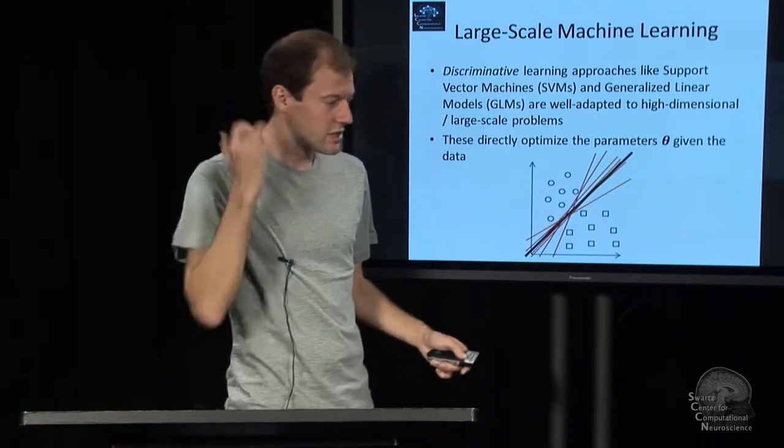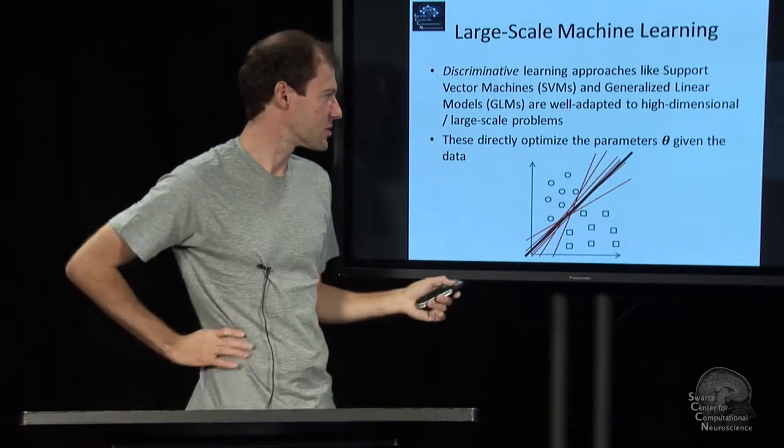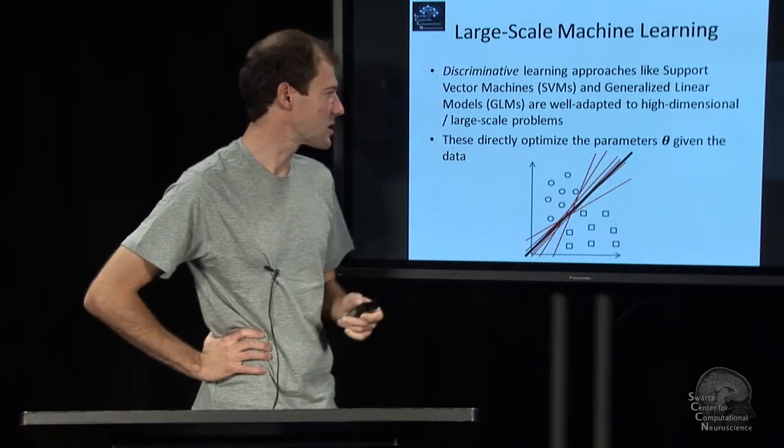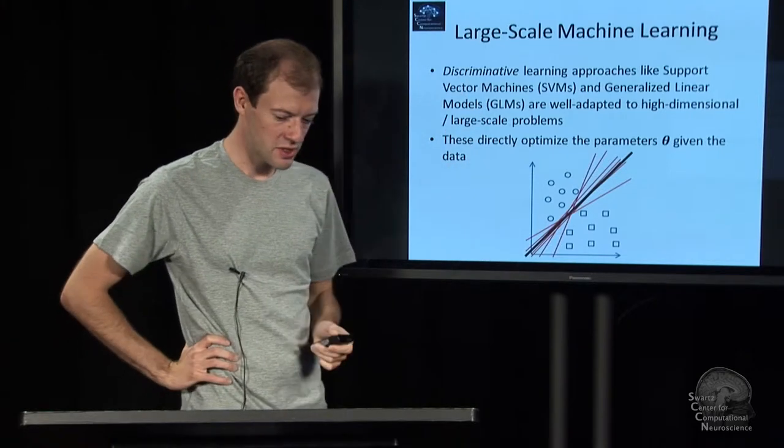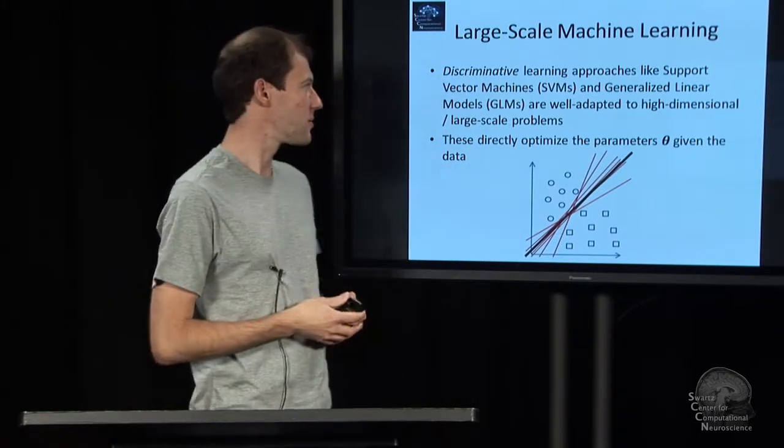So it's, in that sense, already more tractable. And it turns out for certain classes of predictive mappings, it gives rise to very simple optimization problems.